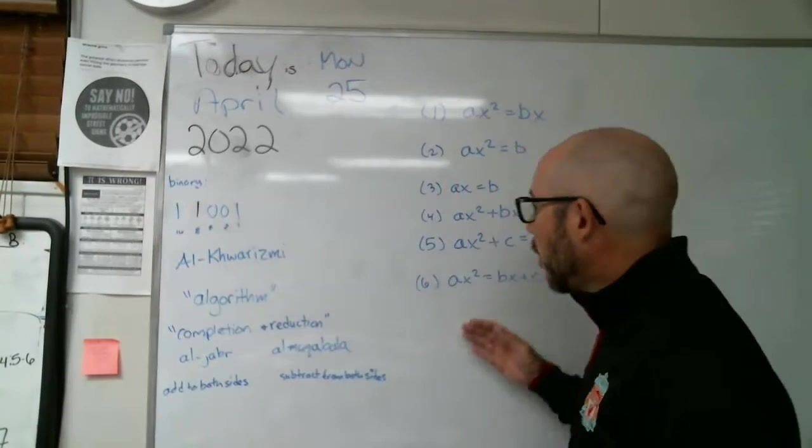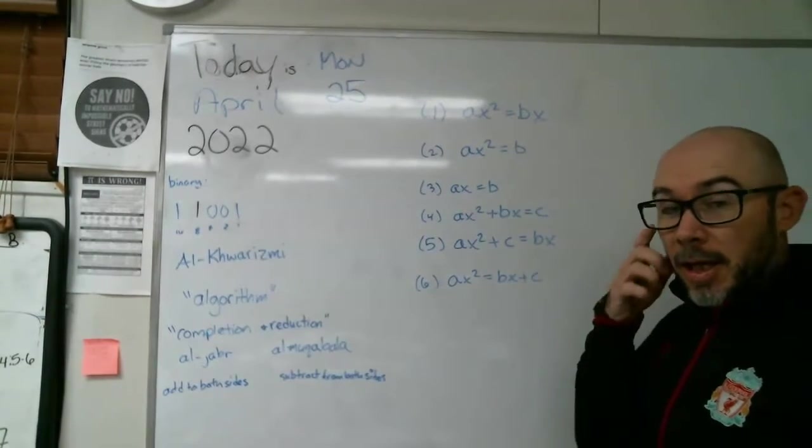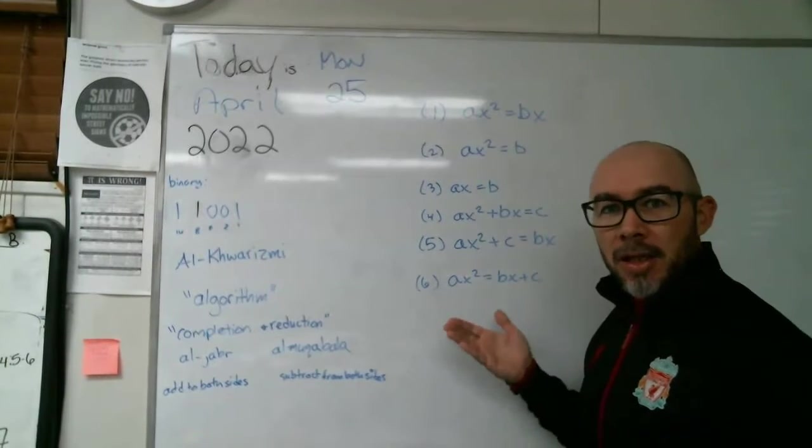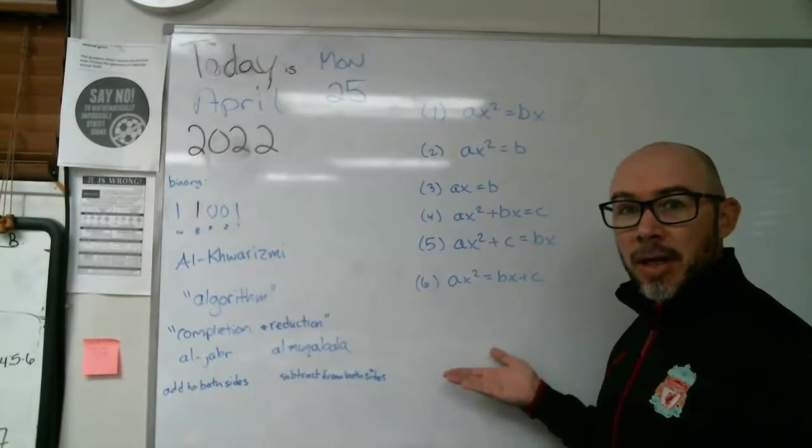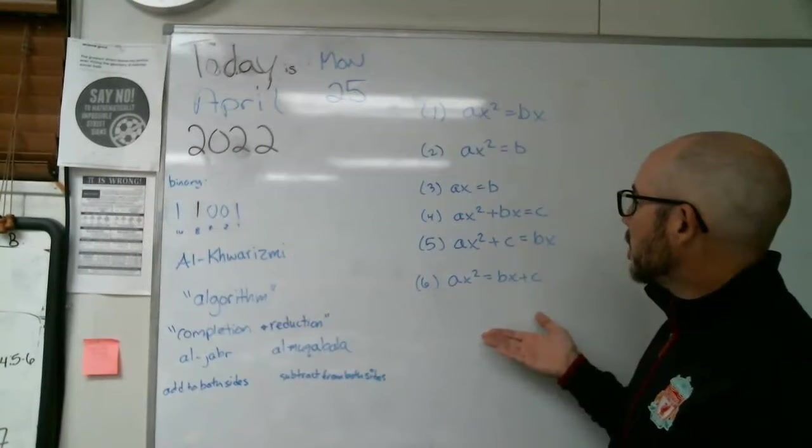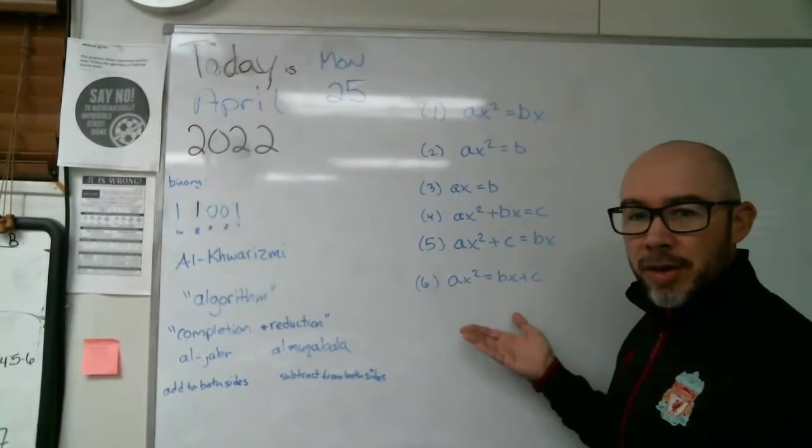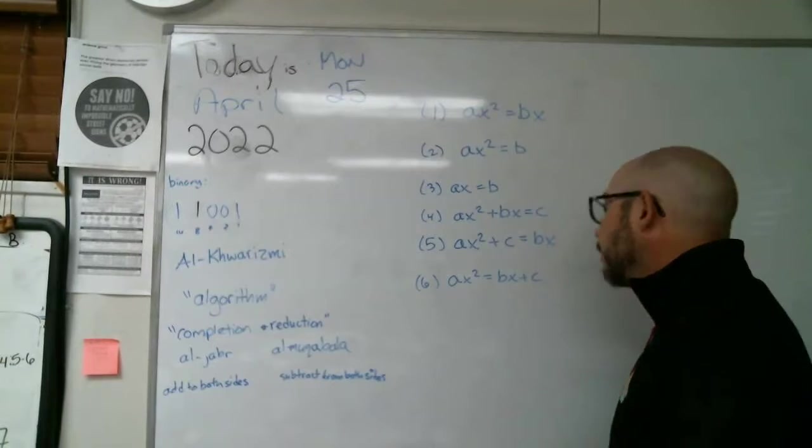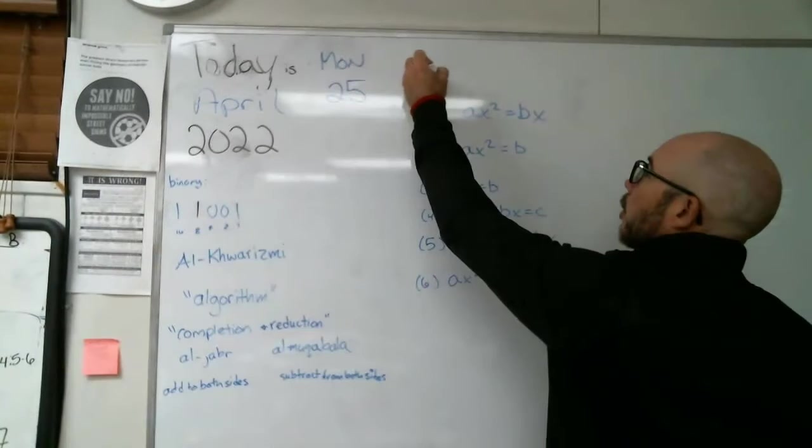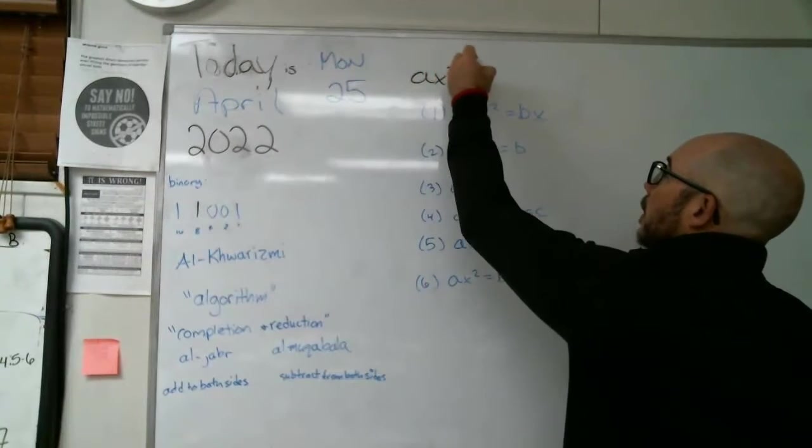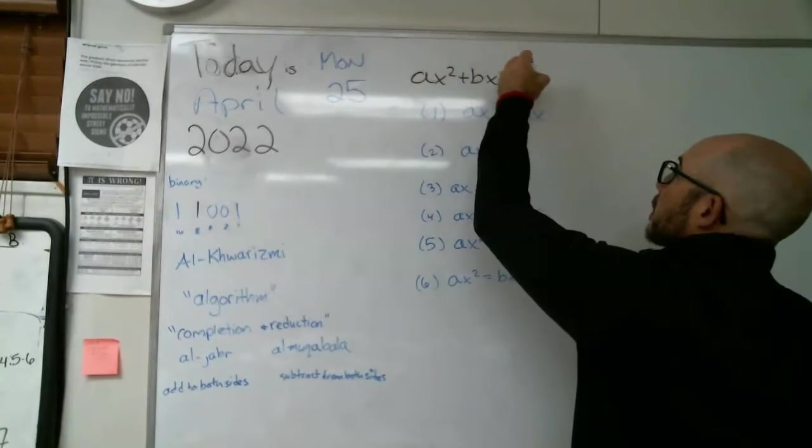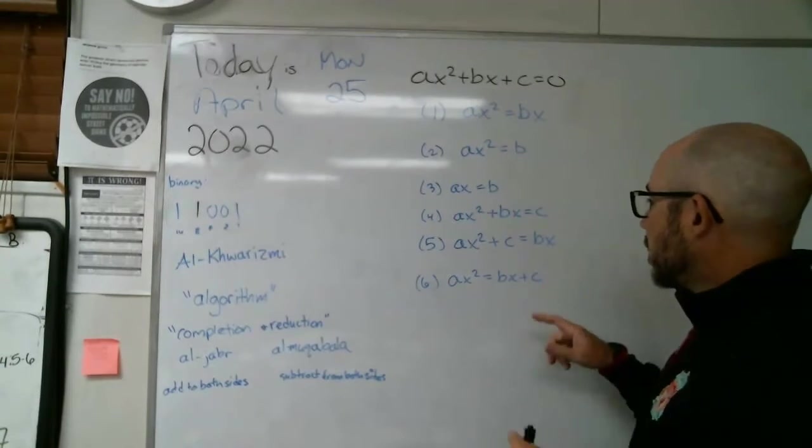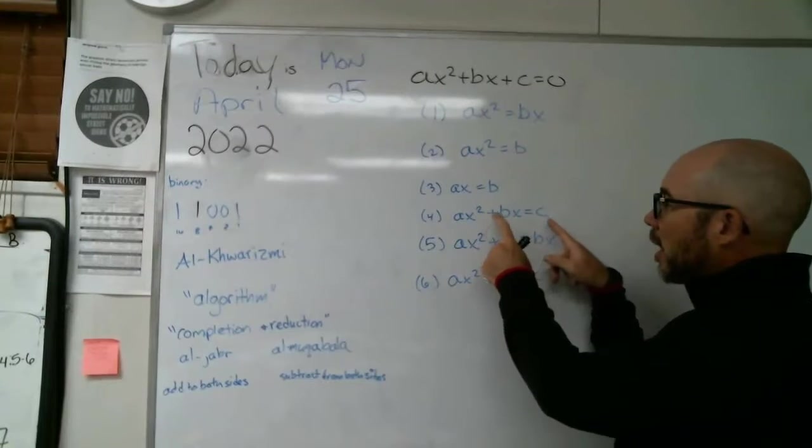Now, let me move over just a bit and look at how Al-Khwarizmi catalogued different kinds of quadratic equations. Now, none of these we see is our complete version of quadratic.